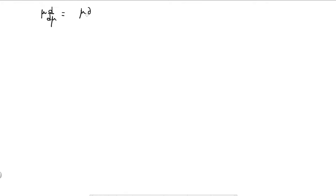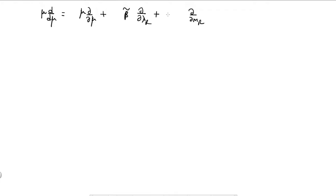As before, you get mu d over d_mu equal to mu del over del_mu, plus del over del_lambda_r times del_lambda_r over del_mu times mu — that is the beta function, that is beta tilde. Additionally, plus del over del_mr times mu times d_mr over d_mu.